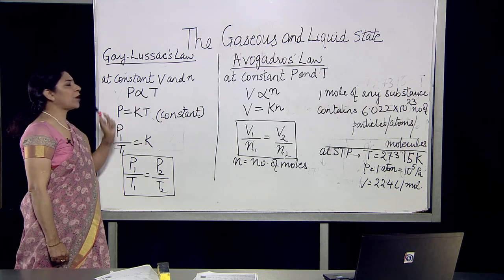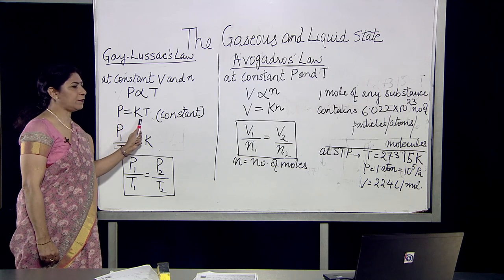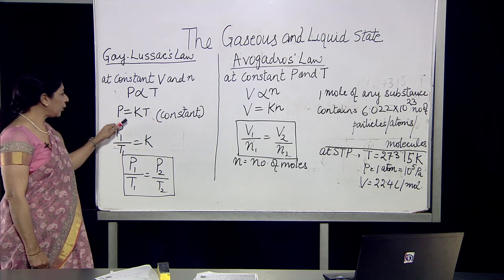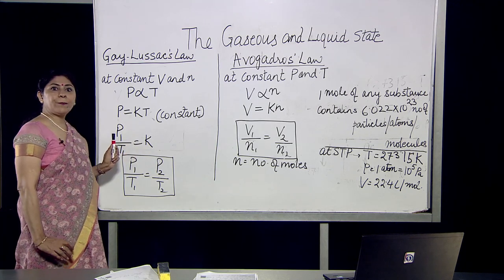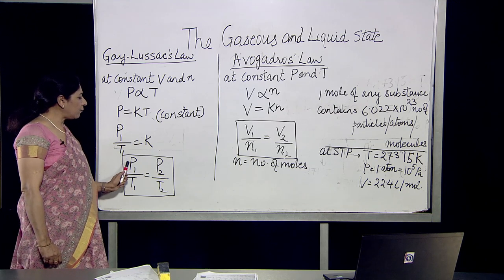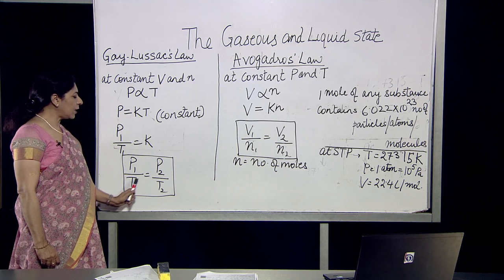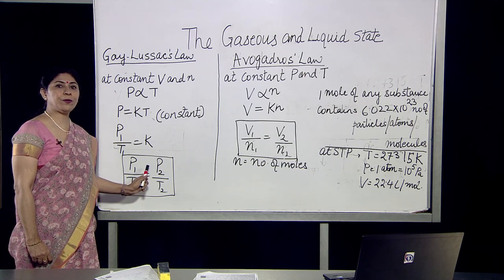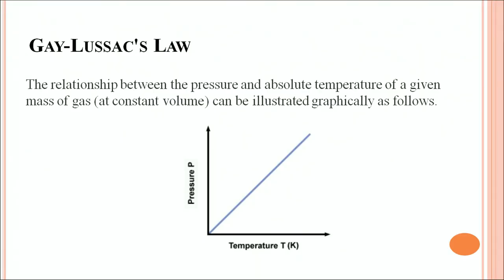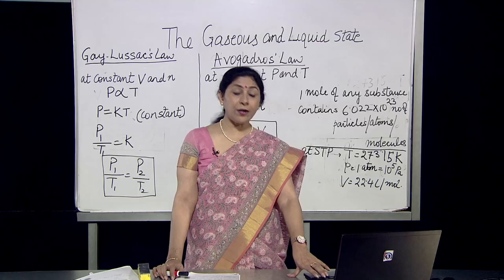We can write P = KT where K is a constant, and P₁/T₁ = P₂/T₂, where P₁ is the initial pressure, T₁ is the initial temperature, P₂ is the final pressure, and T₂ is the final temperature. Making a graph of pressure on the y-axis and temperature on the x-axis, the relationship between pressure and absolute temperature at constant volume gives a straight line.